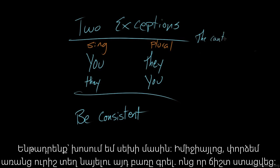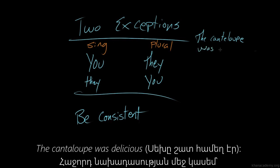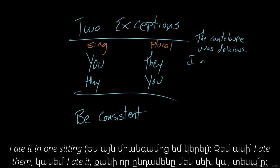So if I'm talking about the cantaloupe, and here's a test. Can I spell cantaloupe in real time without looking it up? That looks right to me. The cantaloupe was delicious. In the next sentence I would say, I ate it in one sitting. And it's not I ate them, it's I ate it, because there's only one cantaloupe. You see?